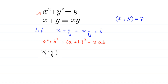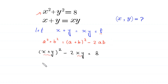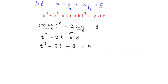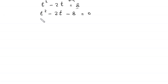So x plus y whole squared minus 2 times xy is equal to 8. Now we replace x plus y and xy with t, giving us t squared minus 2t is equal to 8. Moving 8 to the left-hand side, this becomes t squared minus 2t minus 8 is equal to 0.